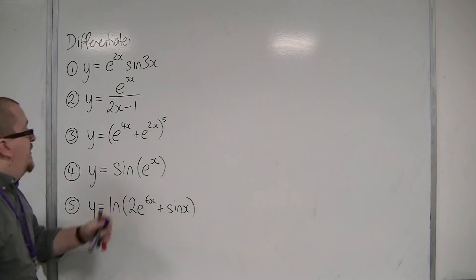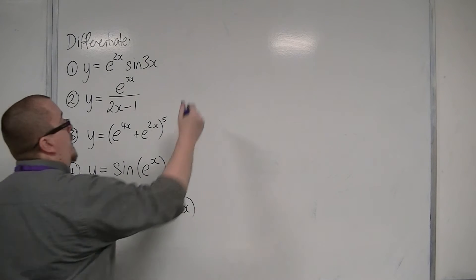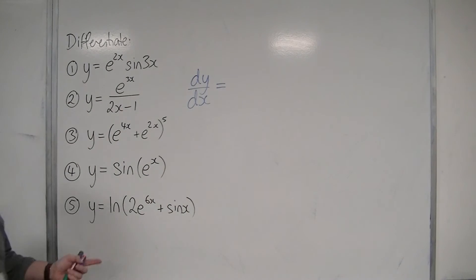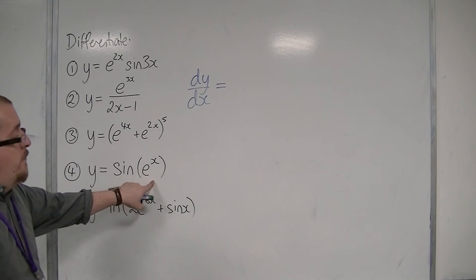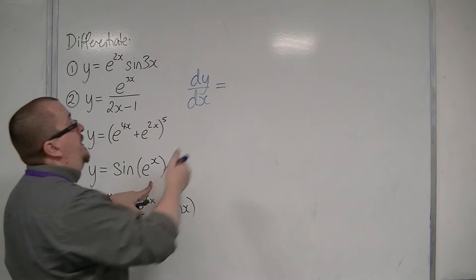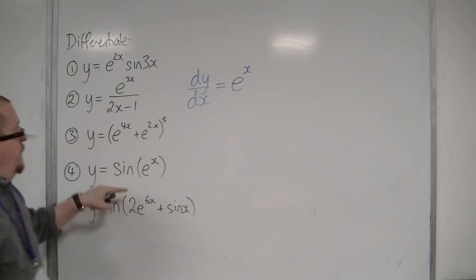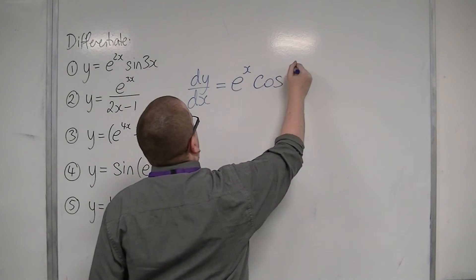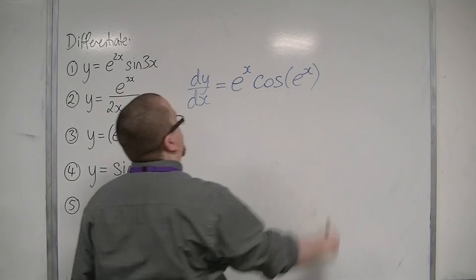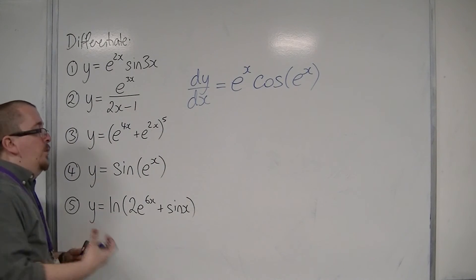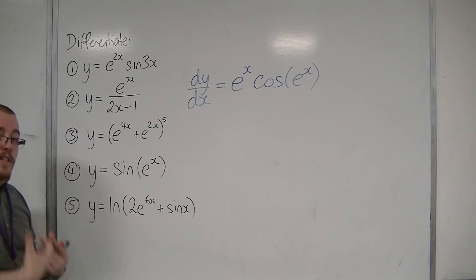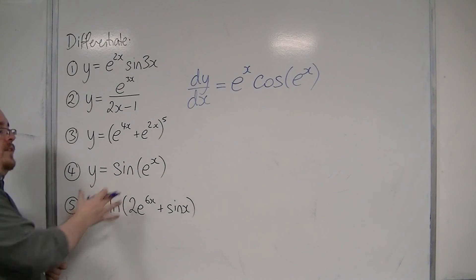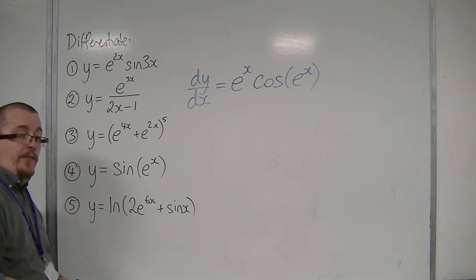For number 4, y is equal to sine of e to the x. We're going to use the chain rule because we have a function of x within another function. The derivative of what's inside comes outside — that's e to the x — and sine differentiates to cosine, so we have cos(e^x). If you're unsure, you can use the long-winded approach with u equal to e to the x and y equal to sine of u, and make sure you get the same thing.